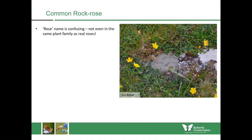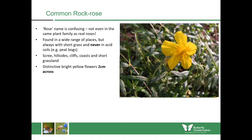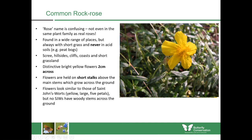Common rock rose is another plant which prefers very well-drained soil. Despite the name, it's not within the family of real roses. It's found in a variety of places — mostly short grass but never in acidic places like peat bogs. You can find it in scree, hillsides, cliffs, coasts and short grassland, often on sunny, south-facing slopes. The flowers are bright yellow, about two centimetres across, held on little stems. The main stems grow across the ground as a woody shrub, while flowering stems are softer. The flowers look similar to St John's worts but no St John's worts have woody stems crossing the ground.